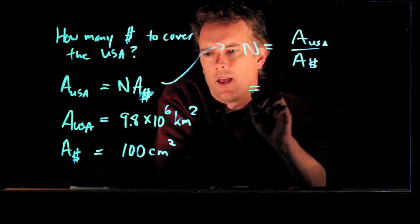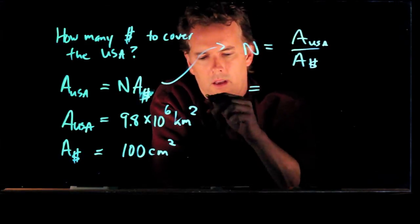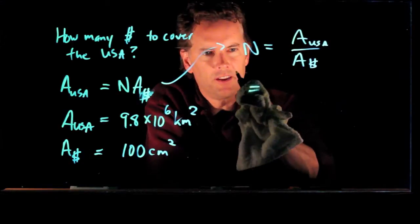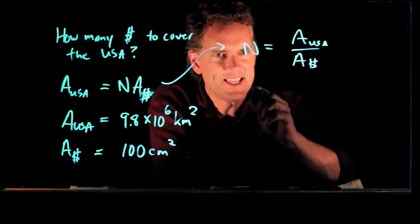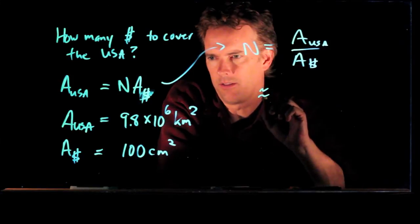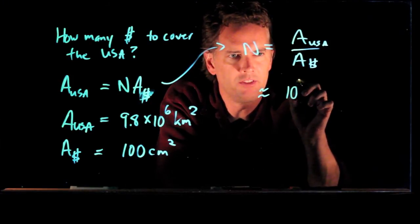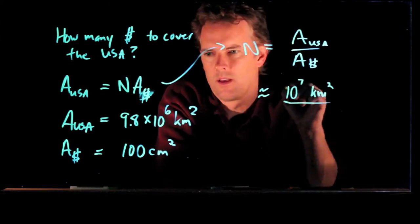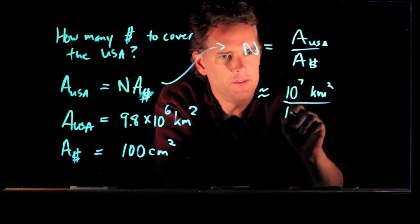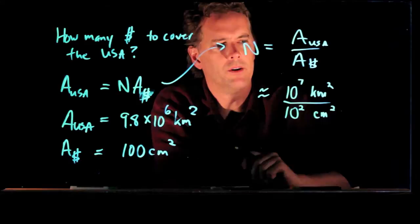So we can put them in. Now, we can approximate this. 9.8 times 10 to the 6, that is pretty close to 10 times 10 to the 6. 10 times 10 to the 6 is 10 to the 7. 100 square centimeters down in the bottom, that is 10 to the 2 square centimeters.